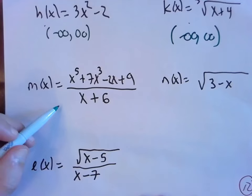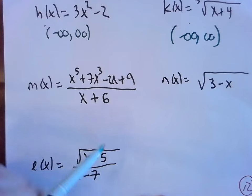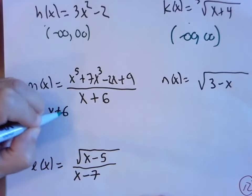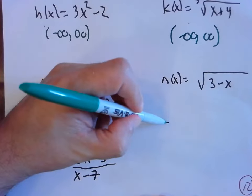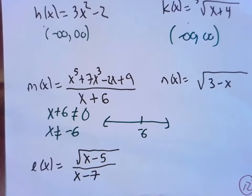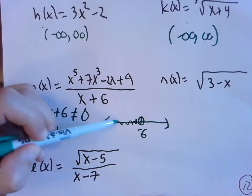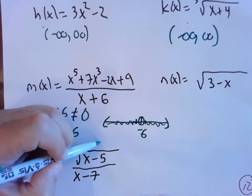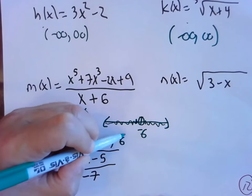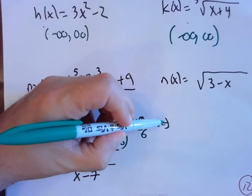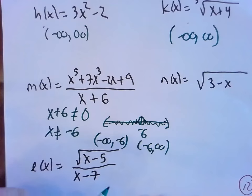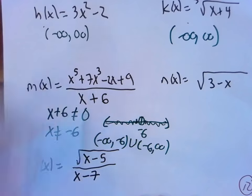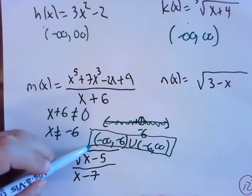For m(x): no roots, but I am dividing. The denominator x + 6 cannot be zero, so x ≠ -6. On the number line, open circle at -6; everything else is good. Domain is (-∞, -6) ∪ (-6, ∞). For n(x): I have a square root, so 3 - x ≥ 0. Subtracting 3: -x ≥ -3. Dividing by negative 1 flips the inequality: x ≤ 3. Domain is (-∞, 3].